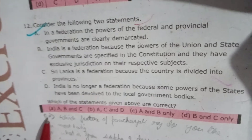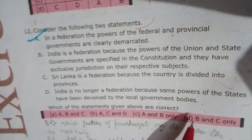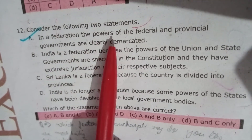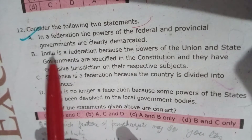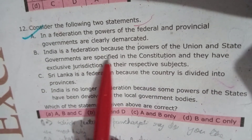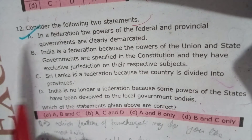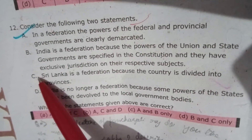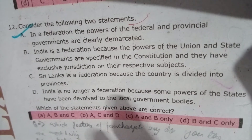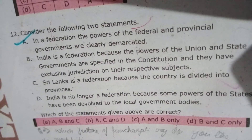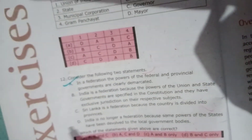The options given are: A — A, B, and C; B — A, C, and D; C — A and B only; D — B and C only. You have to understand the meaning of each statement. Statement A — in a federation, powers of federal and provincial governments are clearly defined — is true. Statement B — India is a federation because powers of Union and State governments are specified in the Constitution with exclusive jurisdiction — is also true. Then you have to check whether C and D also support the federal system, and select the correct option.